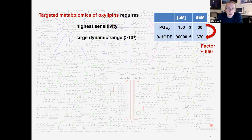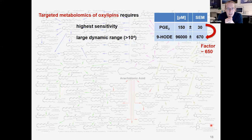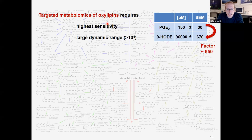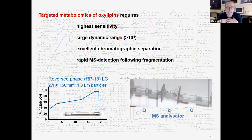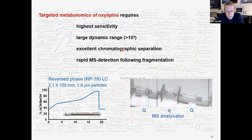So what are the challenges if you set up an LC-MS method for oxylipins? Having said that oxylipins are highly potent lipid mediators, they act in low concentrations, so we need a highly sensitive method to detect them in biological samples. However, in the same samples we have other oxylipins present at much higher concentrations, so we need a large dynamic range. Then we have a lot of different analytes which are isomeric and also isobaric, for which we need excellent chromatographic separation and specific mass spectrometric detection.